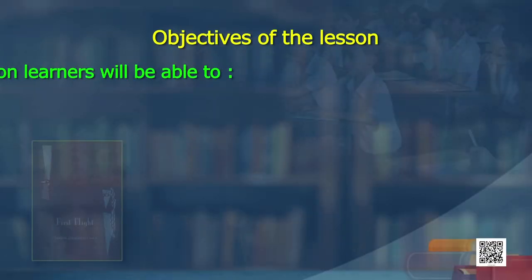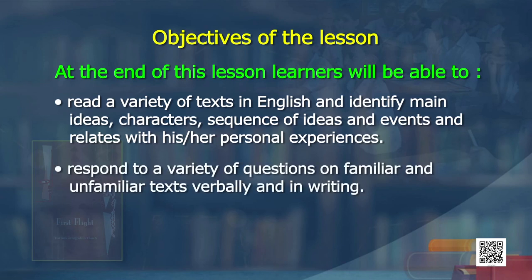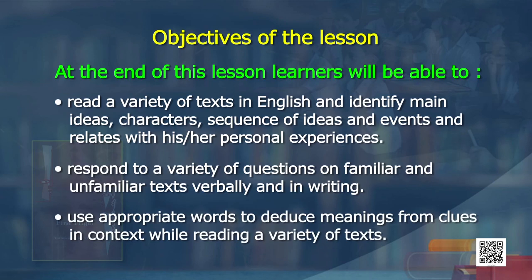The objectives of the lesson: at the end of this lesson, the learner will be able to read a variety of texts in English and identify main ideas, characters, sequence of ideas and events, and relate with personal experiences. Respond to a variety of questions on familiar and unfamiliar texts, verbally and in writing. Use appropriate words to deduce meanings from clues in context while reading a variety of texts.